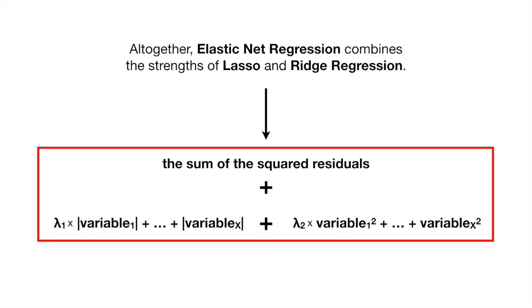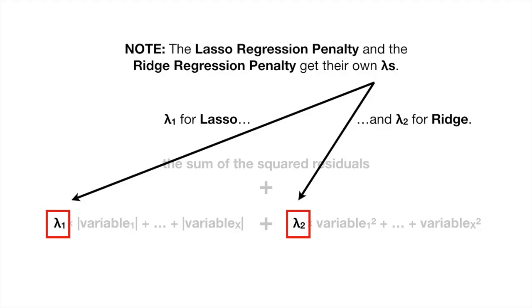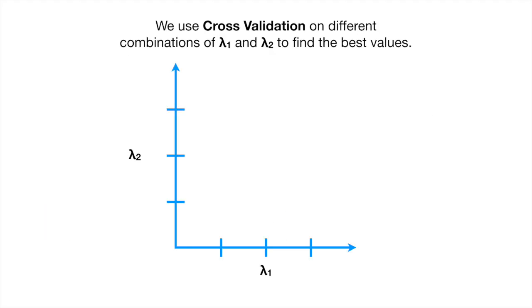All together, Elastic Net combines the strengths of Lasso and Ridge Regression. Note, the Lasso Regression penalty and the Ridge Regression penalty get their own Lambdas. Lambda sub 1 for Lasso, and Lambda sub 2 for Ridge. We use cross-validation on different combinations of Lambda sub 1 and Lambda sub 2 to find the best values.